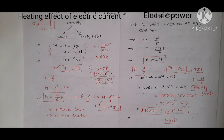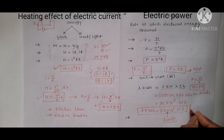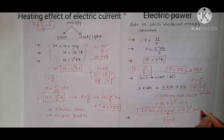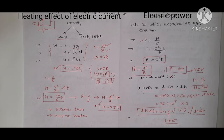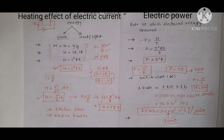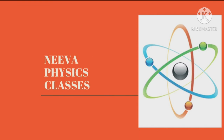One unit of electrical energy equals 3.6 × 10⁶ Joules. When you consume one unit of energy, you pay for it on your electricity bill. Today we discussed numericals on this chapter of electricity. Thank you so much for watching.